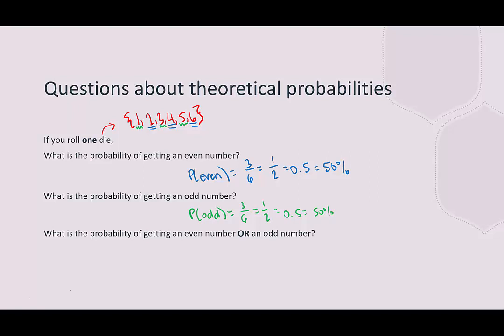What is the probability of getting an even or an odd number? Well, there are three even and three odd, and there's no overlap because no number can be both even and odd. So the number of favorable outcomes would be six, and the total possible outcomes are six. Therefore, there is a 100% chance you will roll a number that is either even or odd on a regular six-sided die.